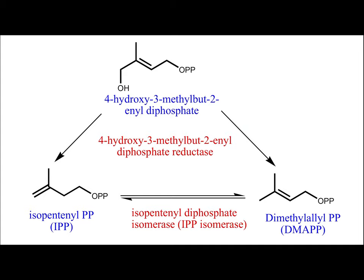The MEP pathway does not end with IPP and DMAPP — from these intermediates, the terpenoids including monoterpenes, diterpenes, and tetraterpenes are further synthesized downstream.